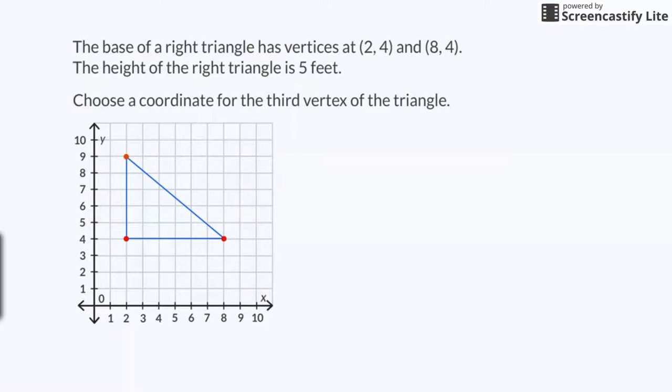The next question I need to answer is, what are the leg lengths of the triangle? Since the legs are the horizontal and vertical lines in this triangle, I can count the number of units of each leg. The vertical leg is 5 units, or 5 feet. Remember that this was also the height of the triangle. To find the length of the other leg, I am going to count the units. 1, 2, 3, 4, 5, 6. There are 6 units. The leg is 6 units, or 6 feet, long.